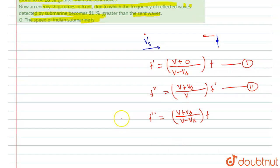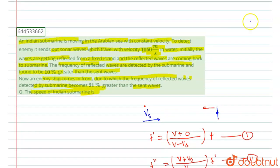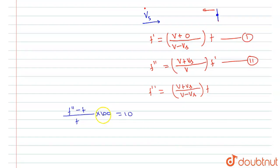It is given that (F double dash minus F) divided by F, multiplied by 100, is equal to 10 — that is, the frequency of the reflected wave detected by the submarine is 10% greater than the sent waves. So from this relation, F double dash divided by F equals V plus Vs divided by V minus Vs.